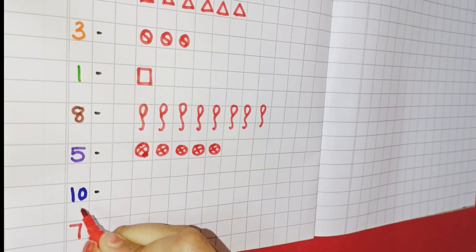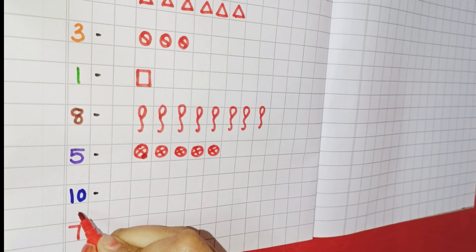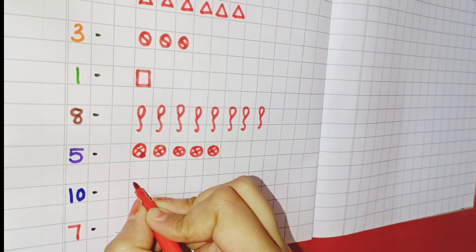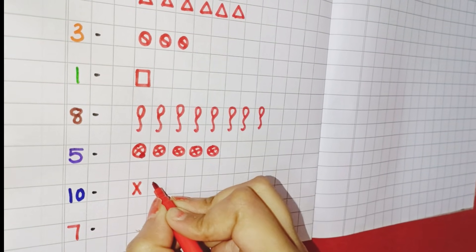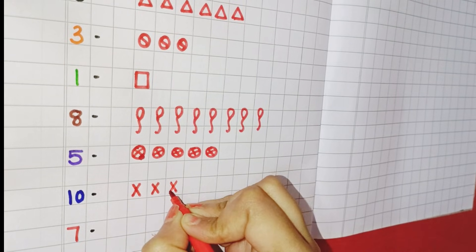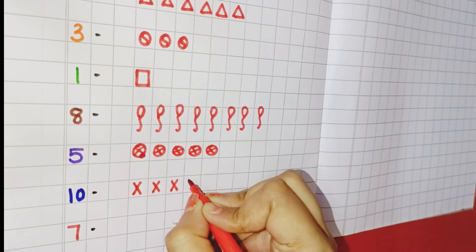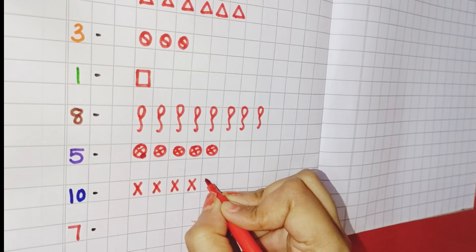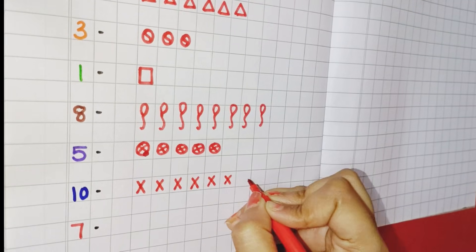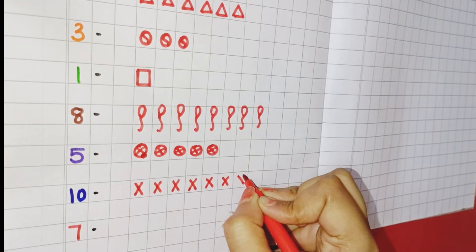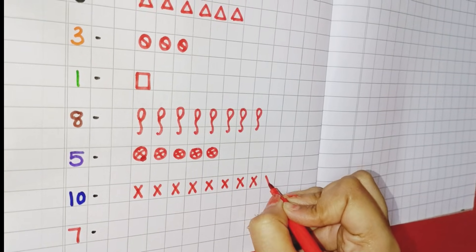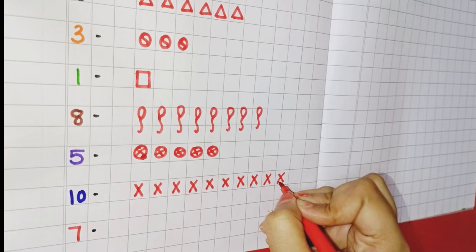Now you can see the next number is seven. So you have to draw your seven objects. One, two, three, four, five, six, seven, eight, nine, ten.